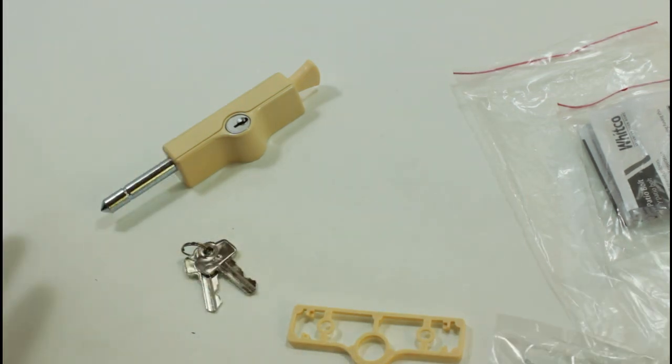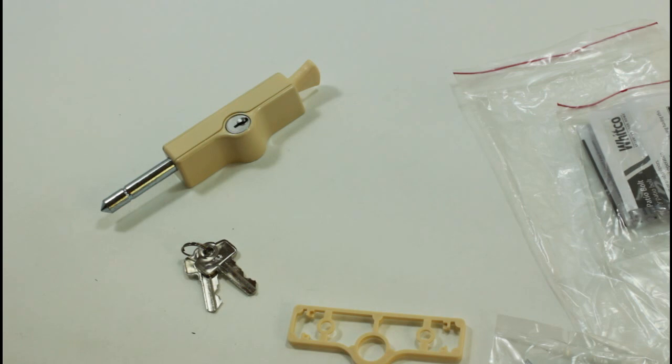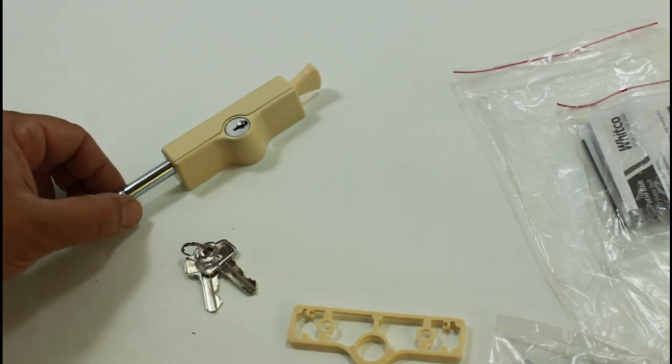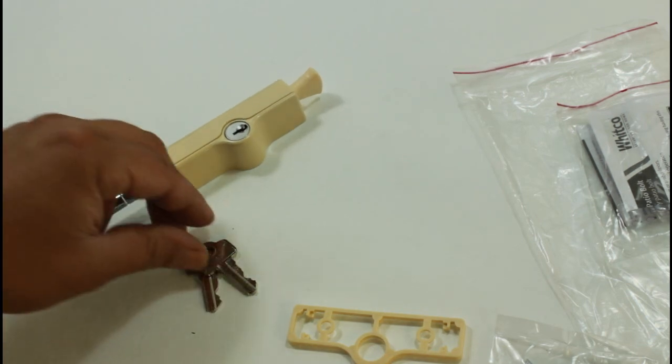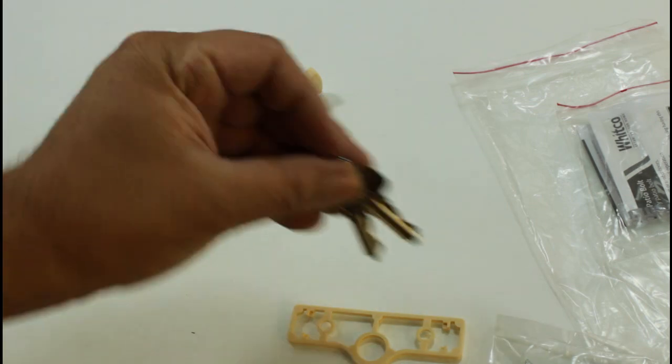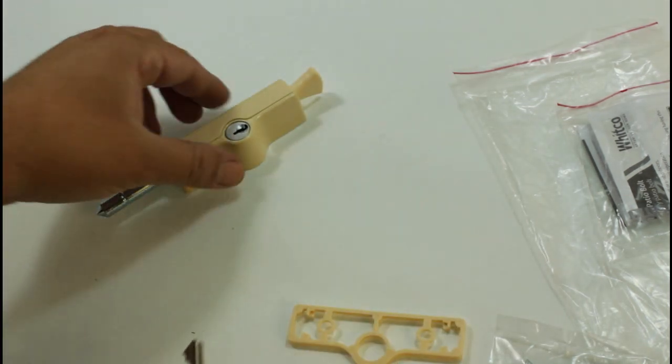Now if you do order multiple patio bolts, if you want them all to be working on the same key, you'd need to select key alike. If you'd like each individual patio bolt to be working with different keys, then you'd select key to differ. So if you order 10 of these on our website and you select key alike, we're going to send you 10 of these and one key can work all 10 and you'll get two copies of the key with each one.